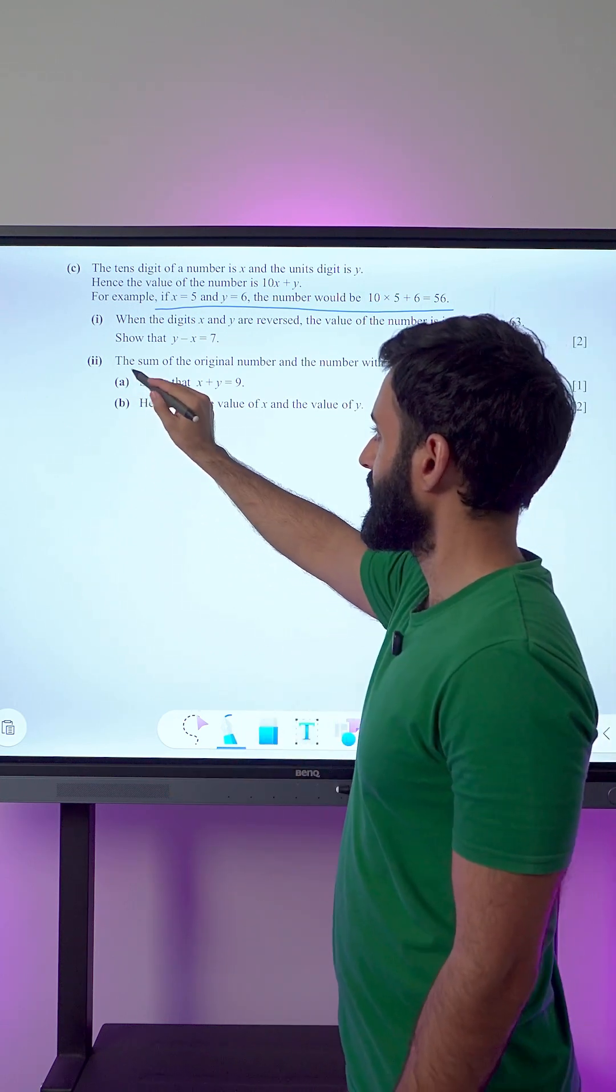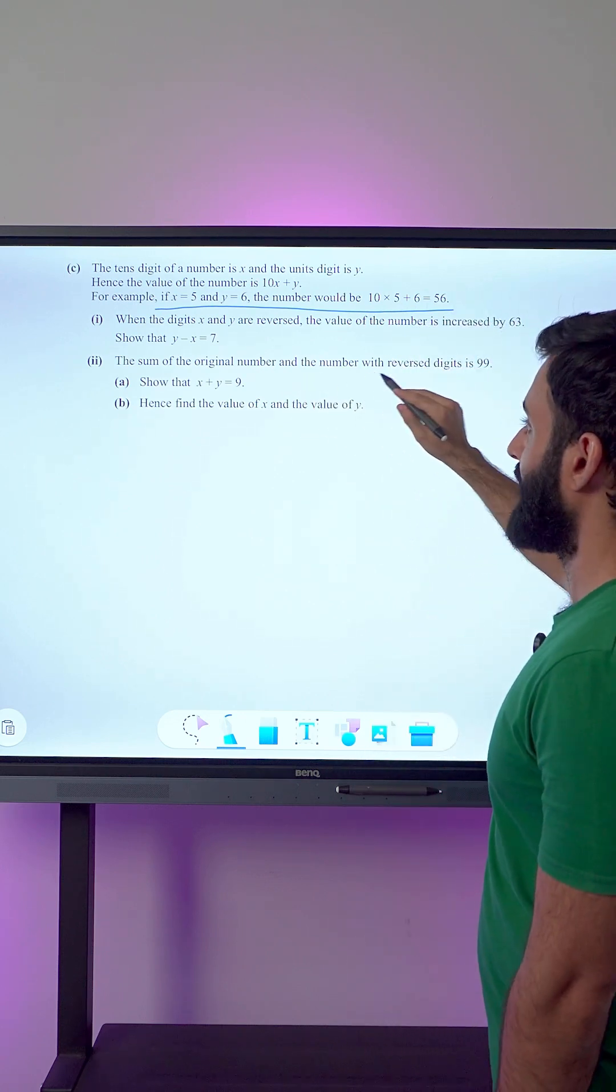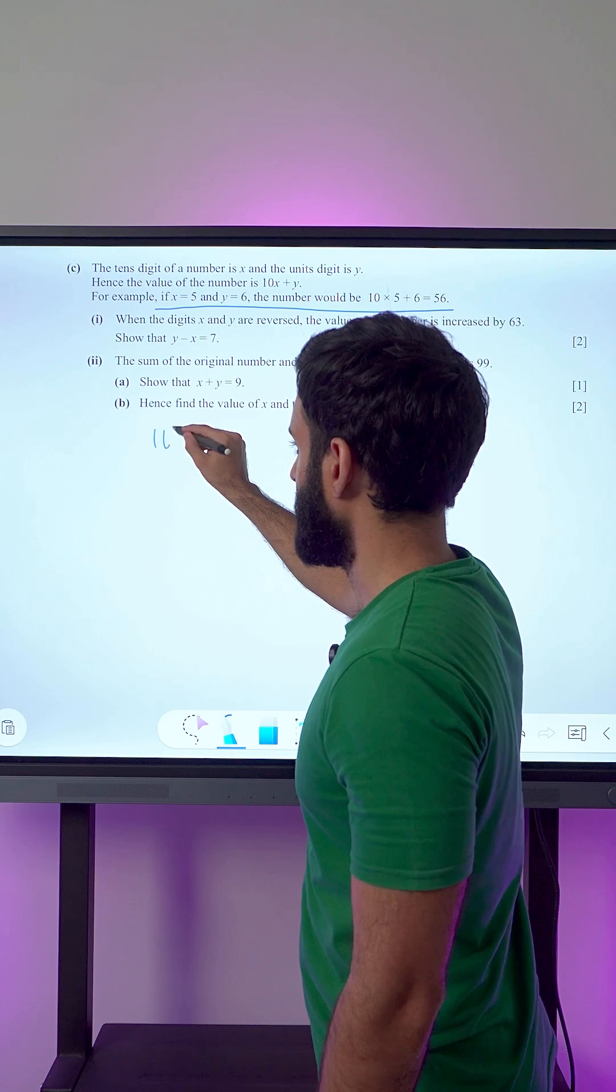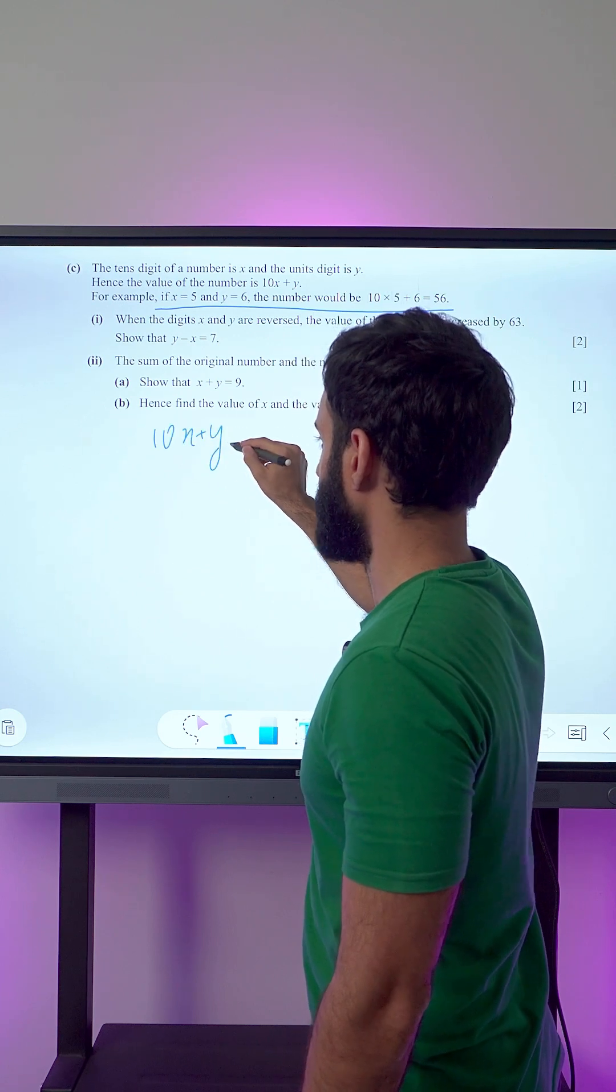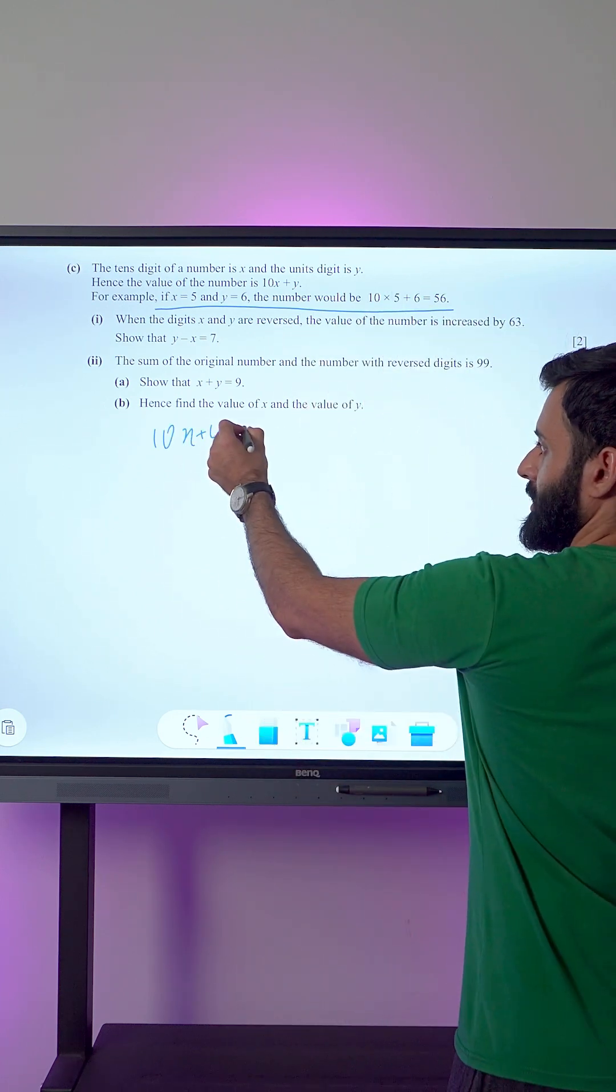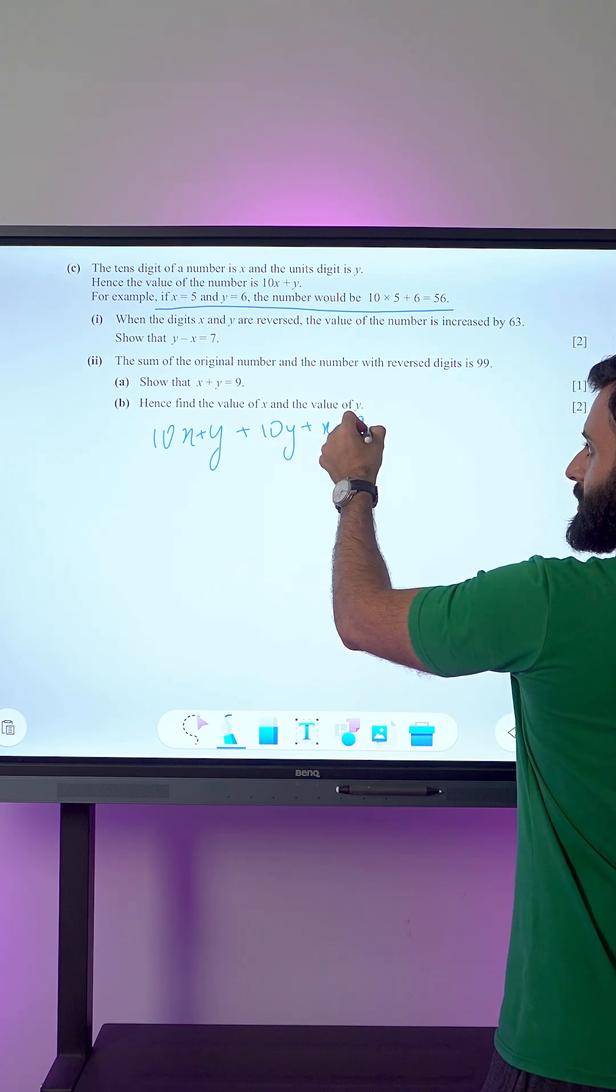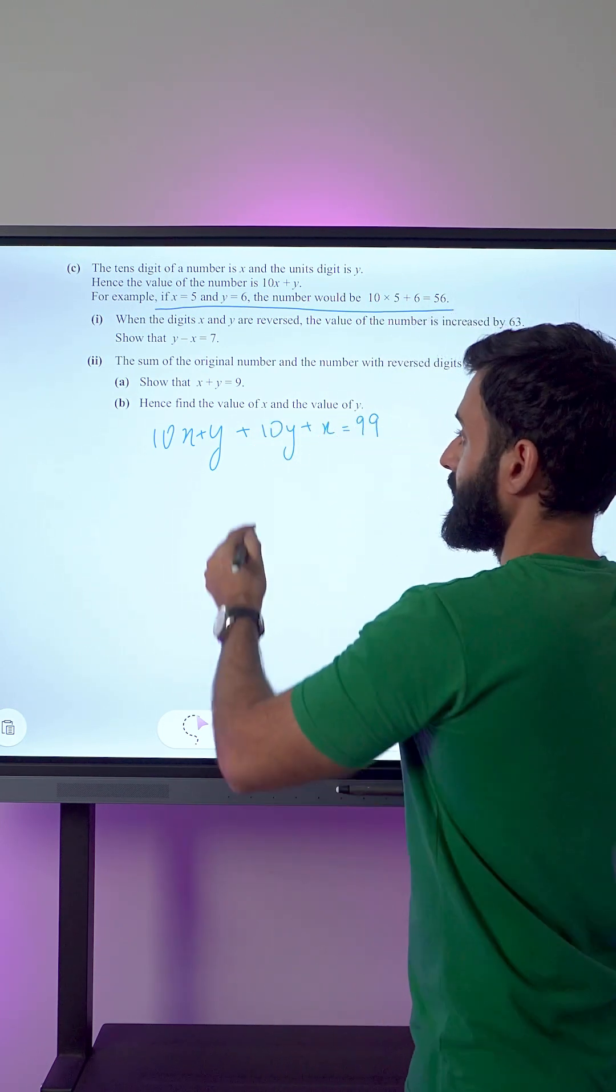The second part says the sum of the original number and the number with reverse digits is 99. That means 10x plus y, the original number, plus 10y plus x equals 99. If you simplify correctly, this is what we should end up with.